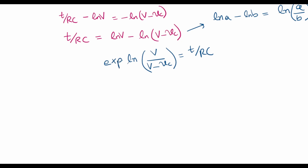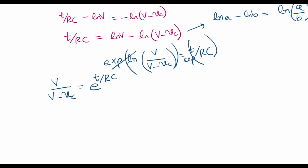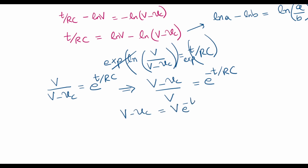Now let's take the exponential of both sides. We get V over (V minus VC) equals e to the power T/RC. Inverting both sides gives (V minus VC)/V equals e to the power minus T/RC, and from here V minus VC equals V times e to the power minus T/RC.